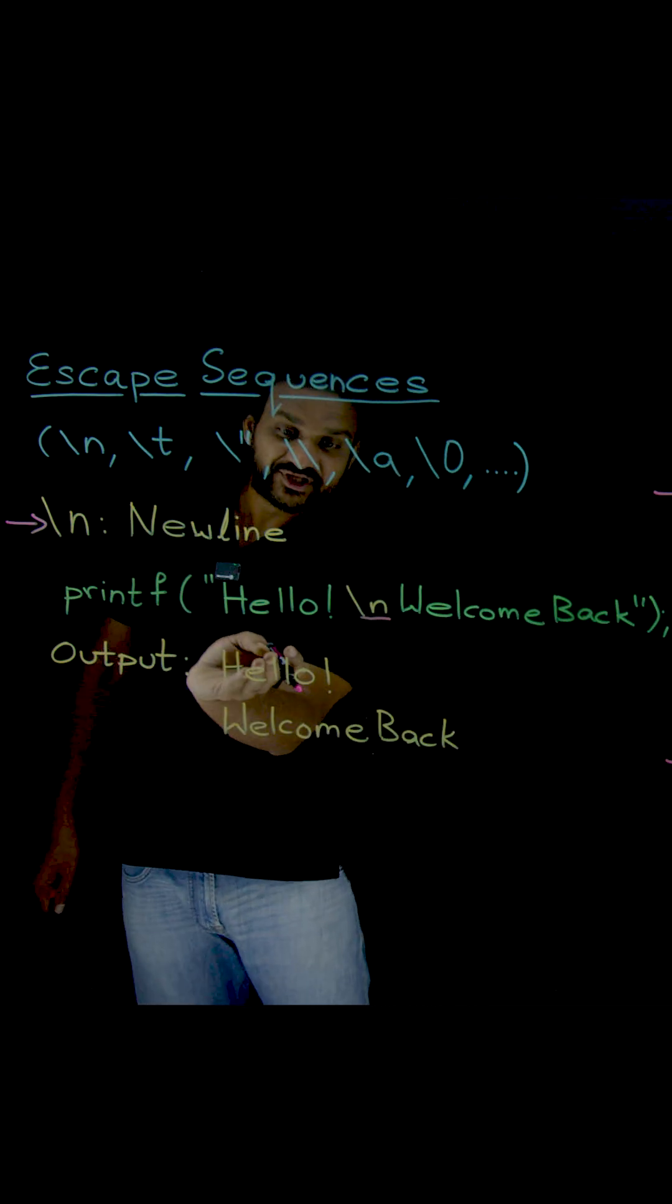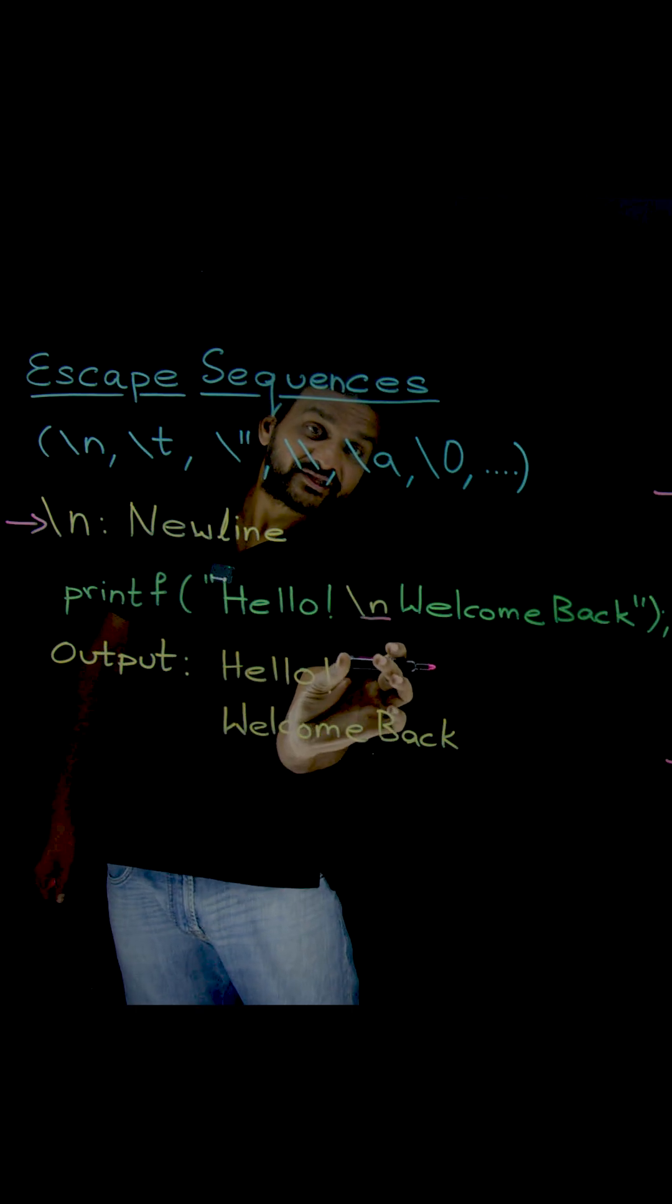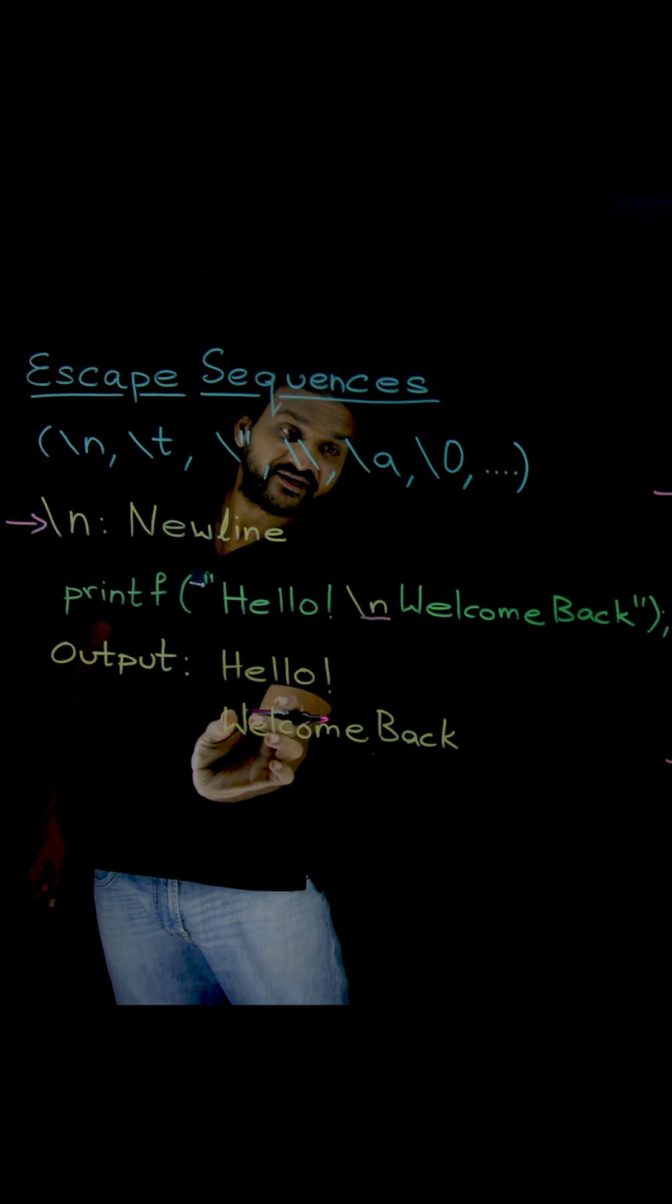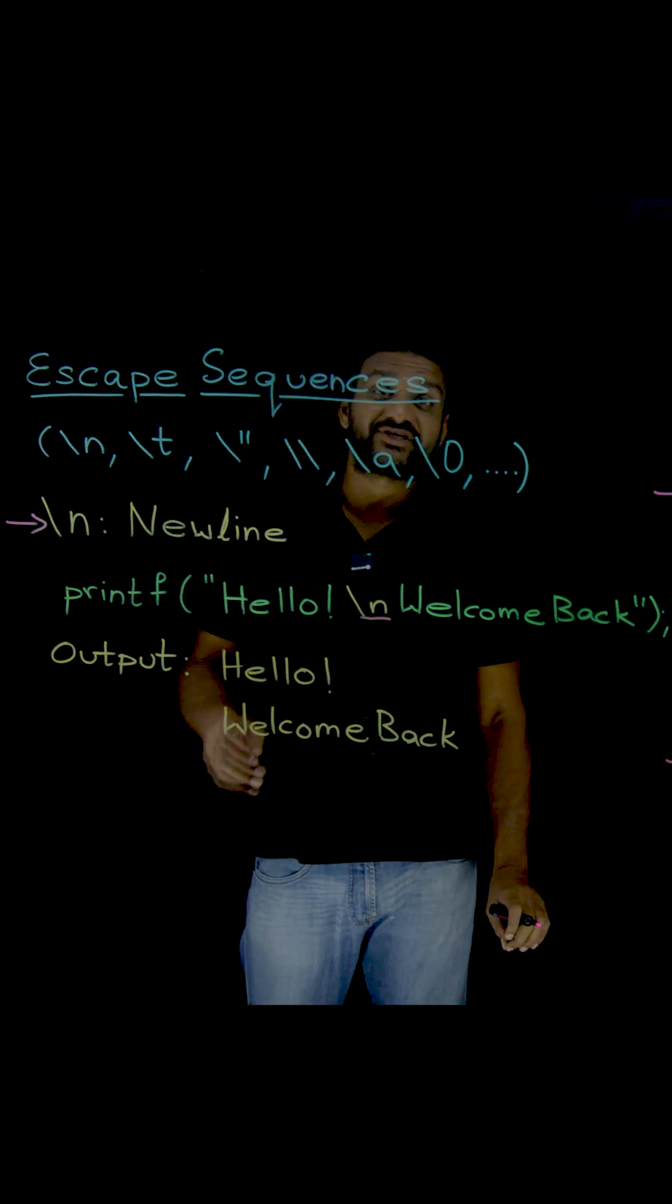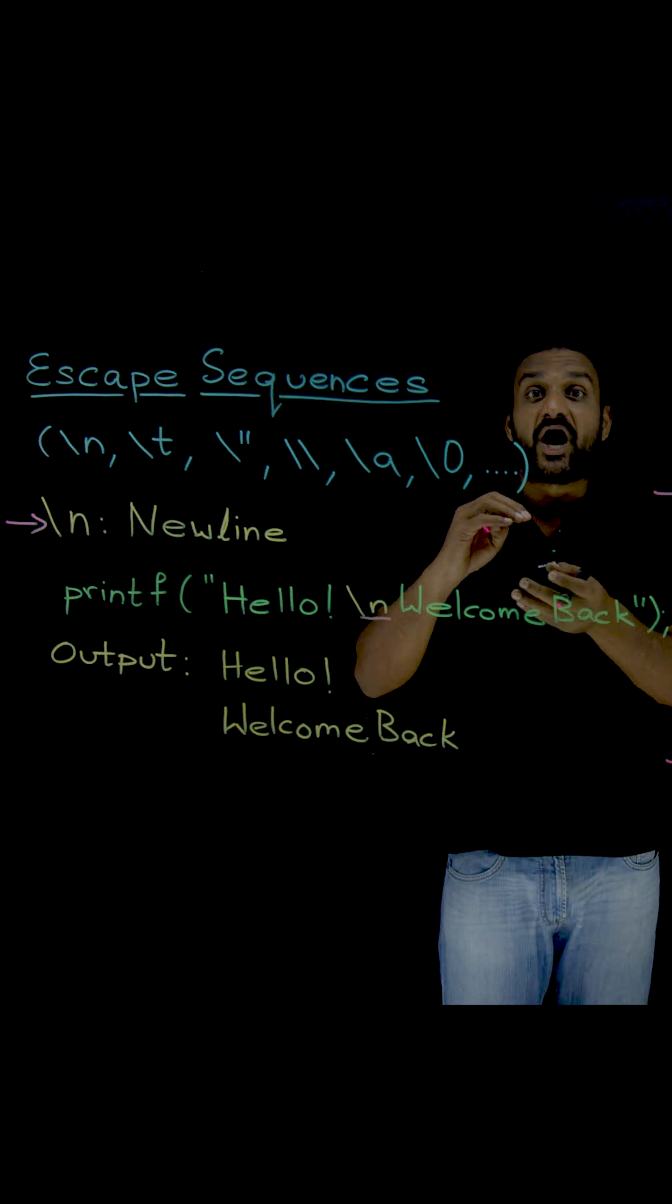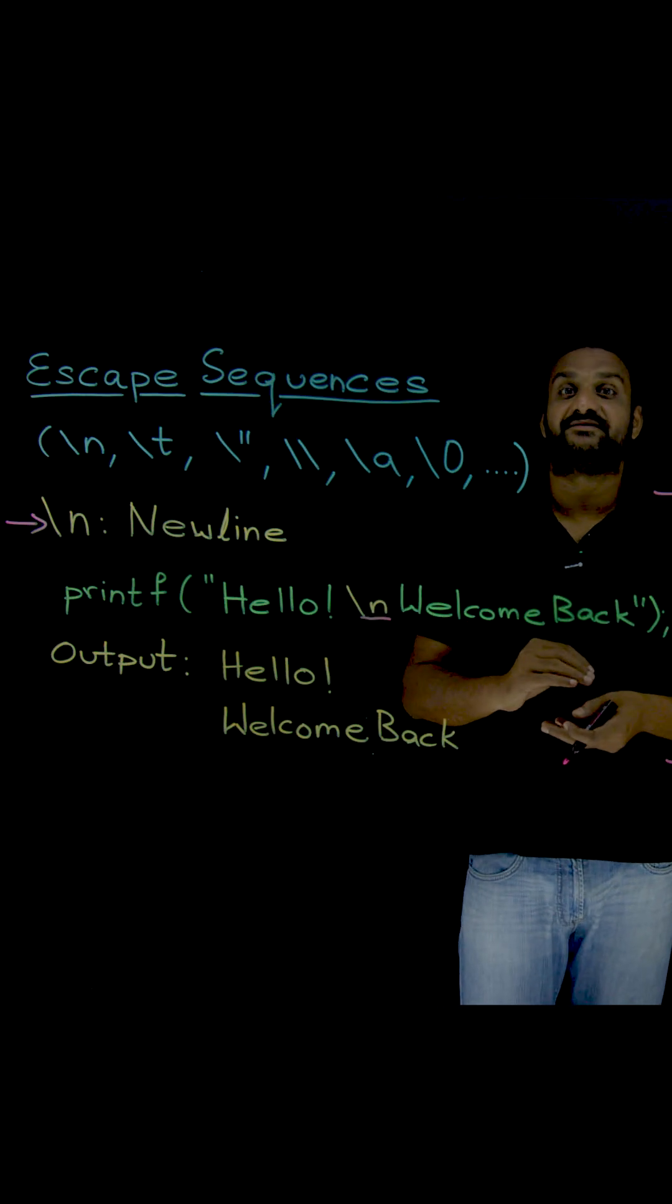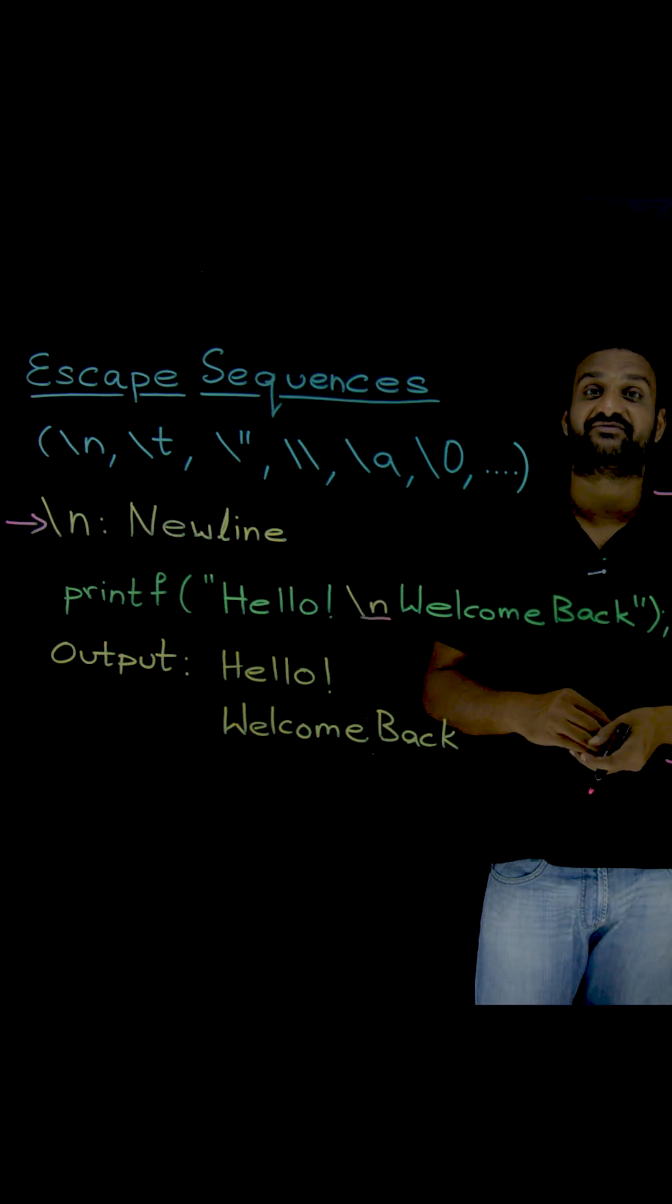So let's see the output. This is how the output will get printed. Immediately after hello, the cursor has been moved to the next line and the remaining part of this printf has been printed in the next line. So this is how a programmer can print the output in multiple lines. That is the use of the slash n escape sequence.